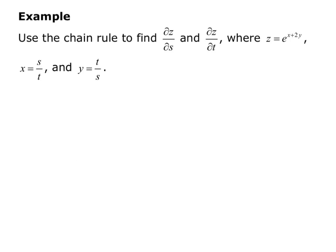Example: use the chain rule to find partial z partial s and partial z partial t, where z equals e to the x plus 2y, x equals s over t, and y equals t over s.